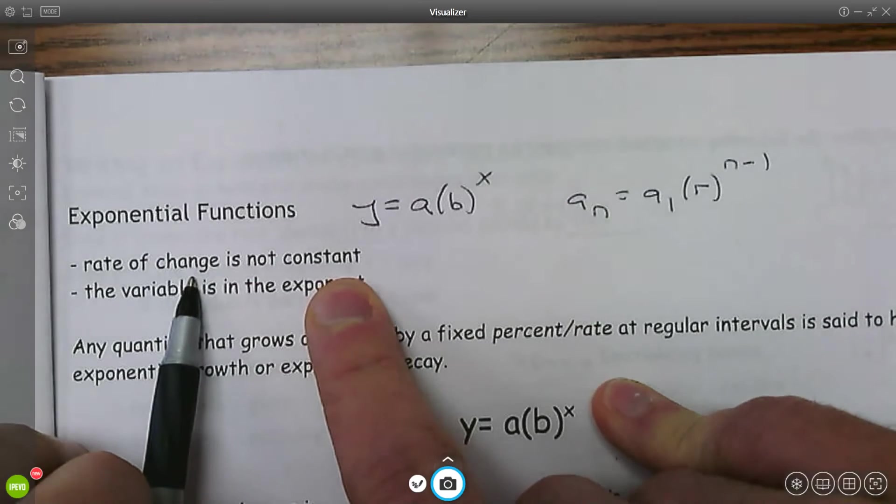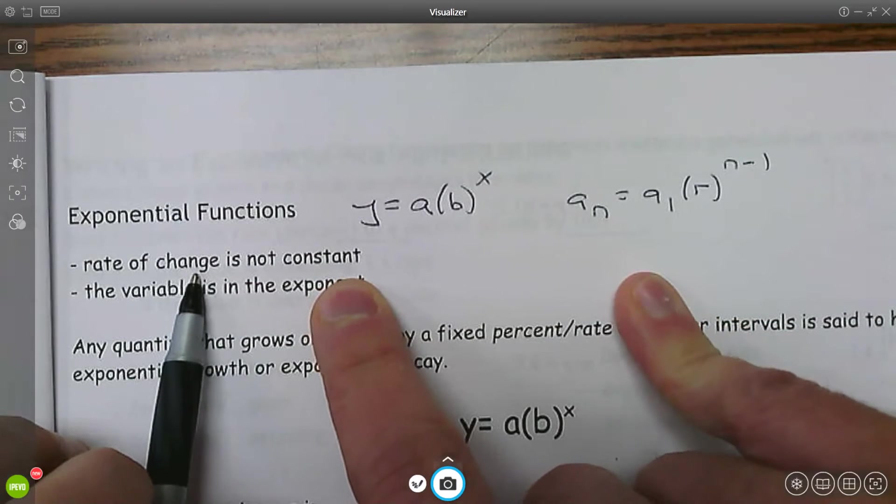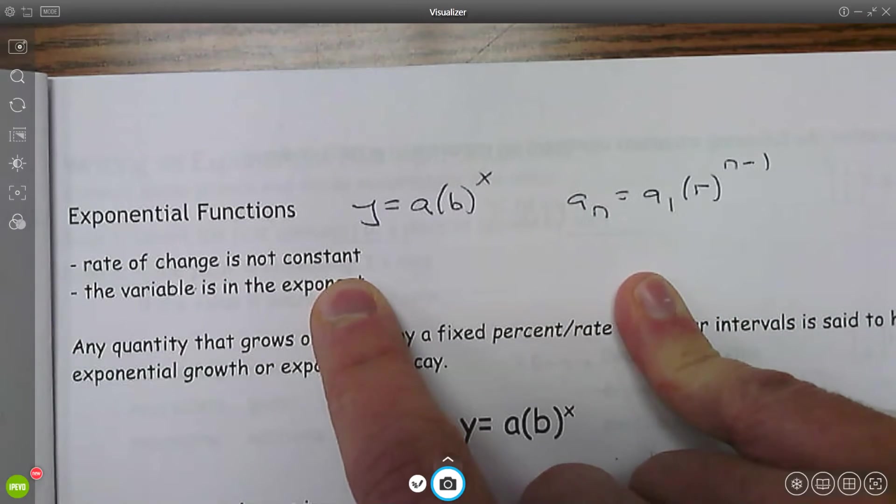The main thing for exponential functions, the rate of change is not constant. For a line, you go up by two, up by two, up by two. Exponential functions, since you're multiplying, you're going to be going up by times two, times two.